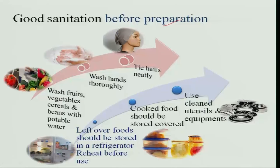For good sanitation before preparation, tie the hair, wash the hands properly, and thoroughly wash all fruits, vegetables, cereals, and whatever material is to be cooked before cooking. Use clean vessels and equipment, and wash them again before cooking. Cooked food should be covered properly with lids, and leftover food should be stored in the refrigerator and reheated just before use. If you follow all these conditions, food remains hygienic and is good for those eating it. Therefore, food sanitation and hygiene should be maintained very well so that the family is healthy, communicable diseases do not spread, and there is no extra expenditure on medical costs because of eating bad food.